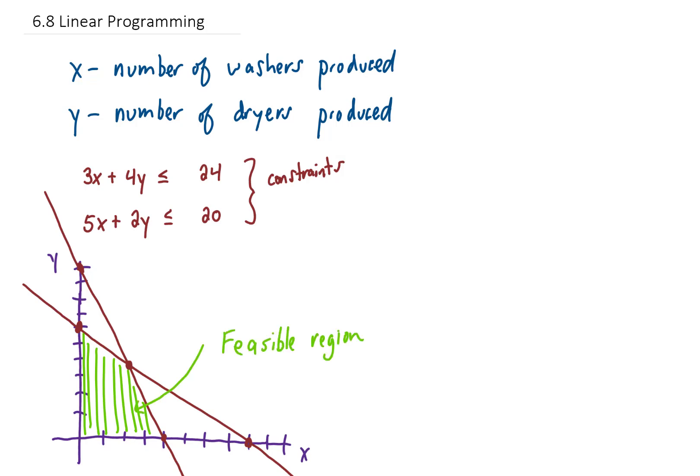The corners of the feasible region are called vertices. And now let's say that we have some function that we want to either maximize or minimize. Let's say we have a profit function that we want to maximize.